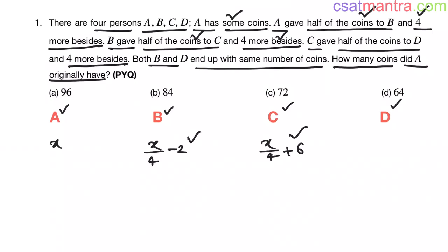Now C gave half of the coins to D. So half of X by 4 plus 6 and four more besides, plus 4. Now this is X by 8 plus 3 plus 4 my friends. So this is X by 8 plus 7. So number of coins D has now is X by 8 plus 7.